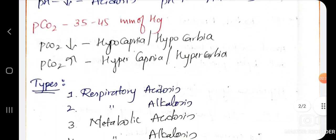PCO2. So PCO2 normal 35 to 45 mm of Hg. So PCO2 kadme adhre na avu hypocapnia atwa hypocarbia anta karithi vi. PCO2 jasthi adhre hypercapnia atwa hypercarbia anta karithi vi. So again we have types.